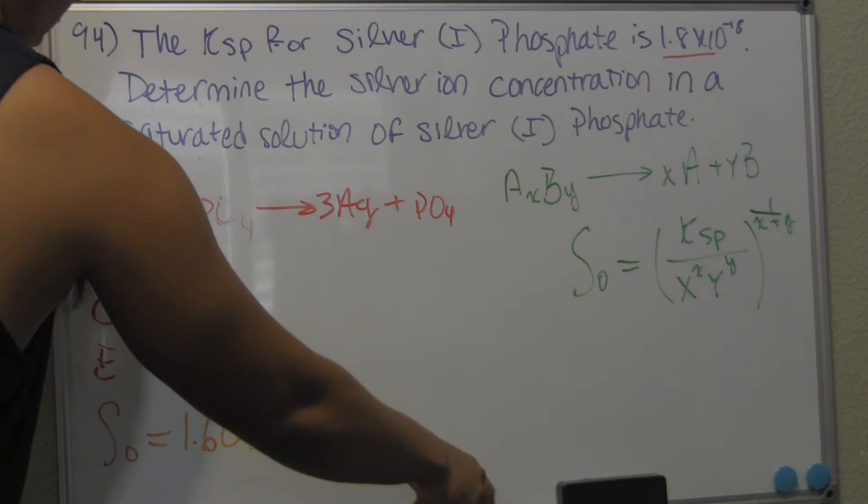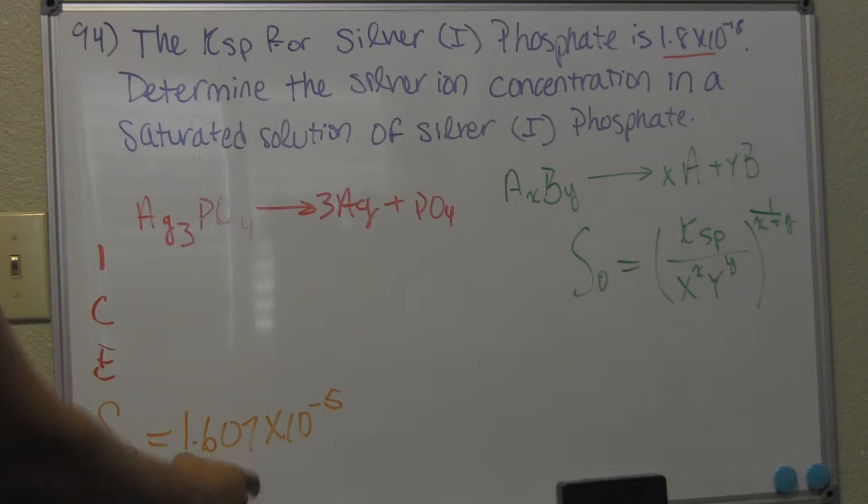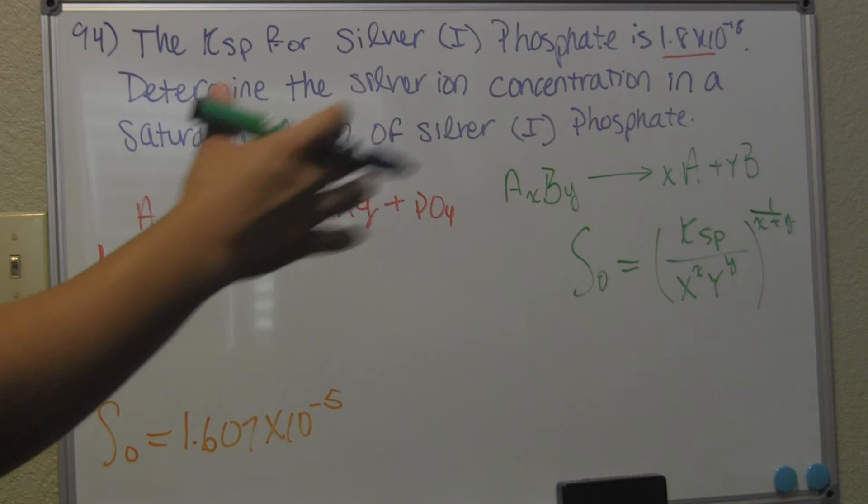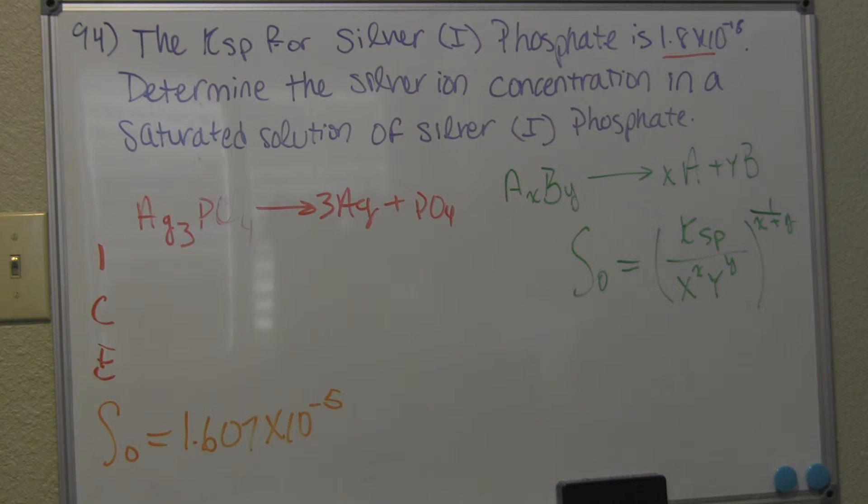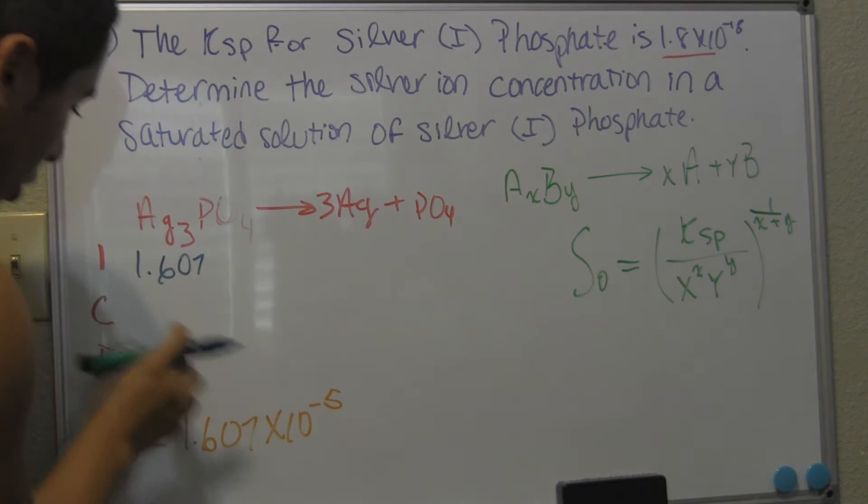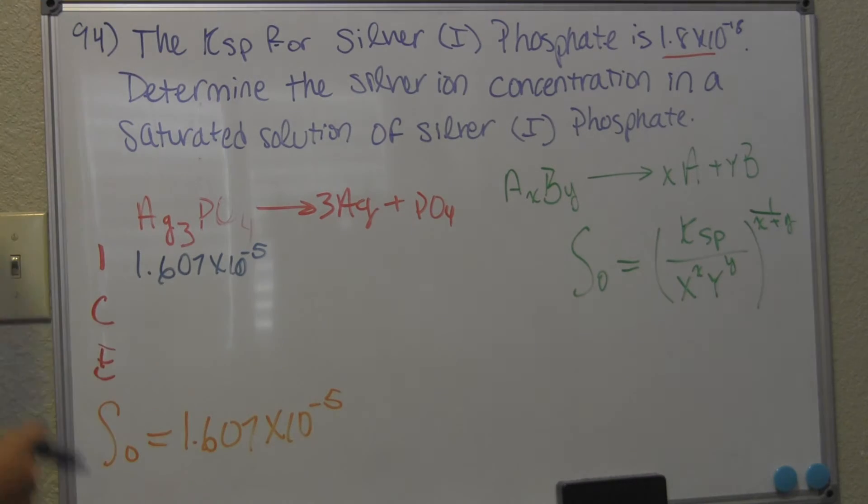Now I know I said that I don't like using ice tables, but it's much easier now that we have molar solubility because now we don't have to work backwards. We're going to start from the top. So our initial is going to be our molar solubility. And just to refresh your mind, molar solubility is the portion of our larger substance that's going to be fully dissolving. So in a second, I'll explain that a little bit more.